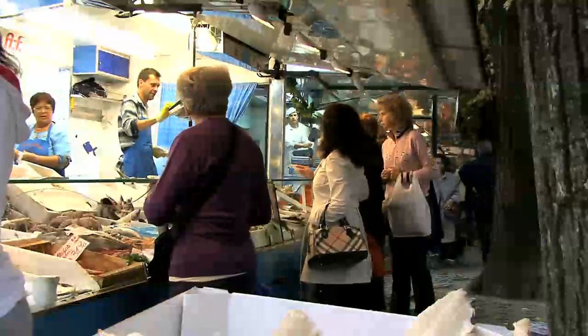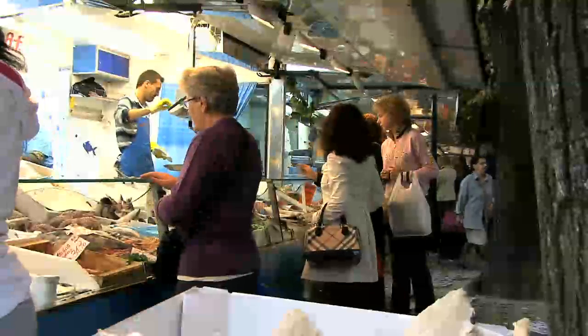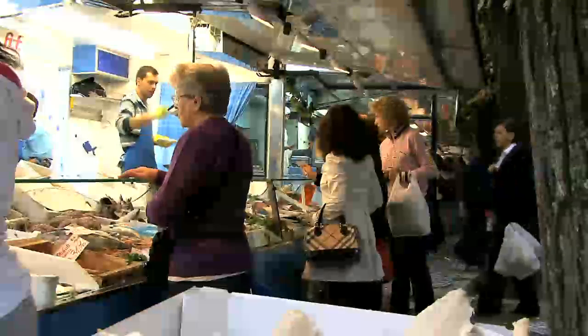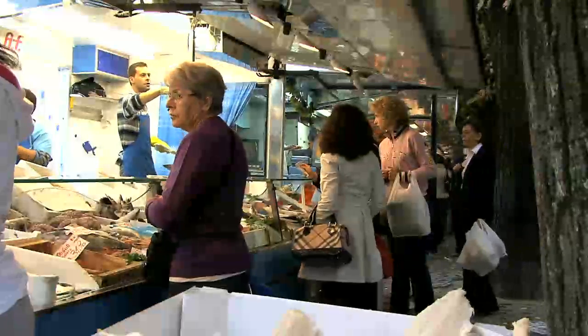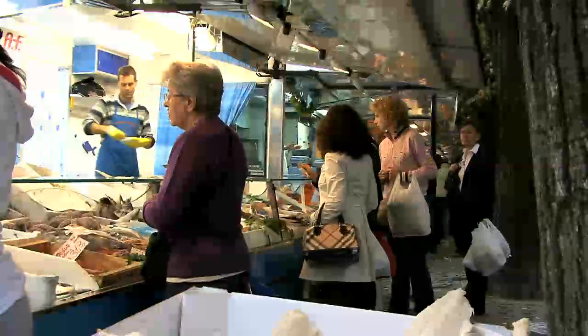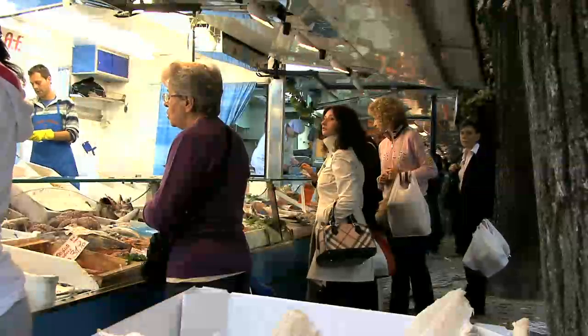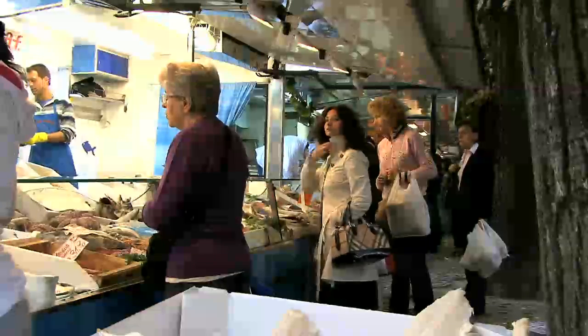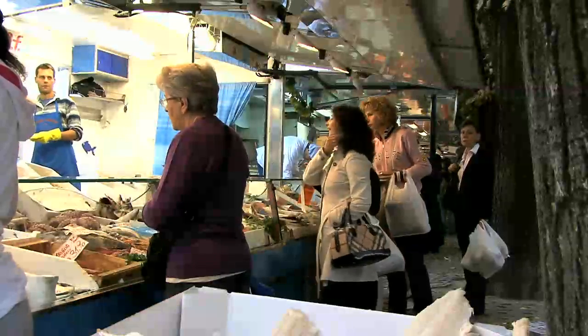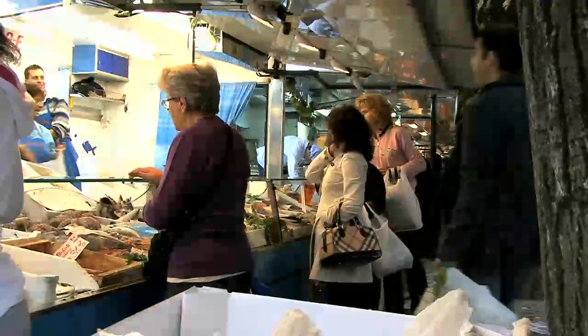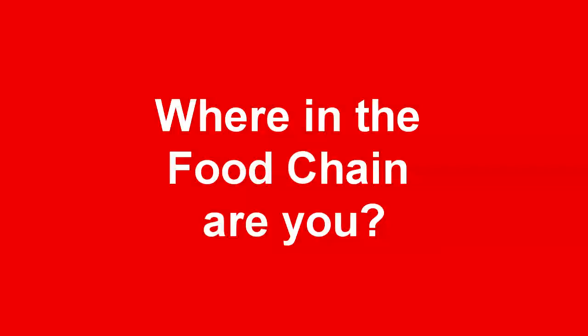People are buying fish in the fish market — people buy fish from the fish salesmen. And the fish salesmen are just affiliates for the fishermen. Where in the Fool Chain are you?